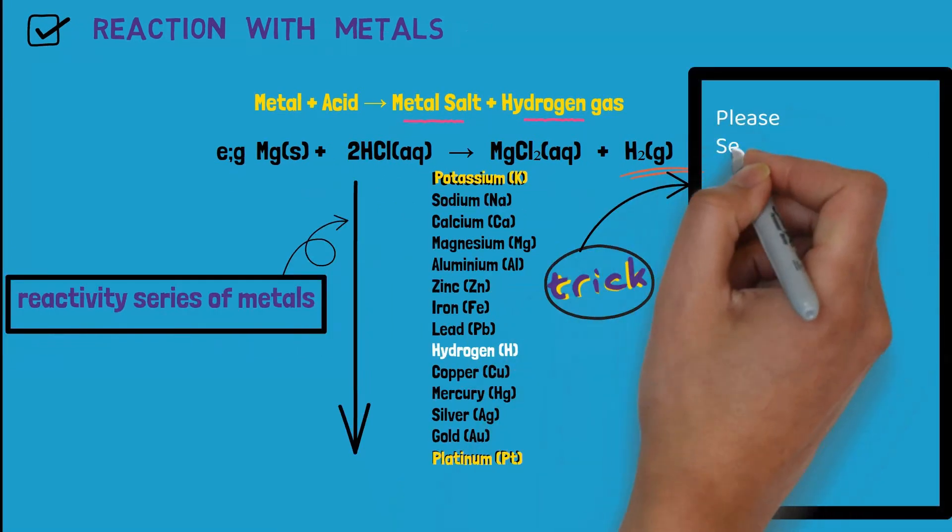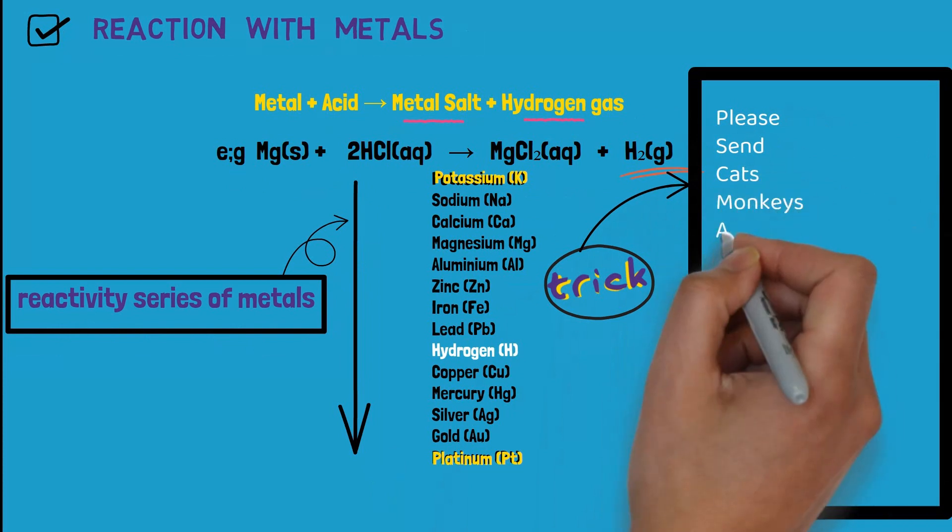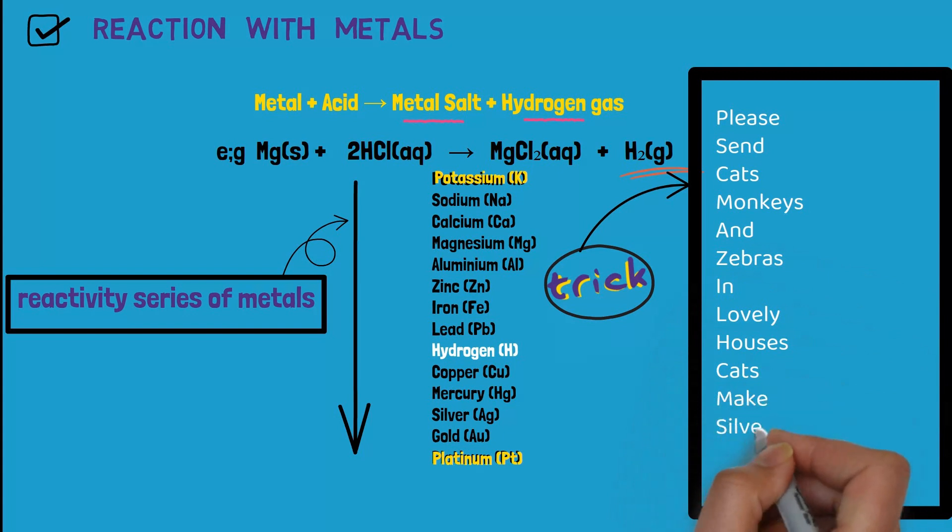The reactivity series of metals towards acids decreases from sodium to platinum. You can remember this series with the mnemonic: Please send cats, monkeys, and zebras in lovely houses. Cats make silver, gold, platinum.